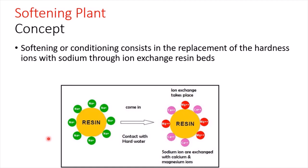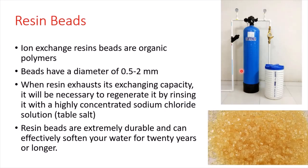Softening consists of replacing the hardness ions — calcium and magnesium — with sodium ions. We have a certain media called resin, and on this media there are sodium ions. When the resin comes into contact with hard water, the sodium ions are exchanged with the calcium and magnesium ions. Our water will no longer contain calcium and magnesium, but will contain sodium ions instead. This is what we call the ion exchange process.